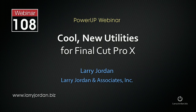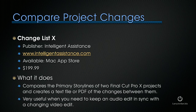In this excerpt, I want to talk about how you can compare project changes using Change List 10. One of the challenges we have is that deadlines are so tight that sometimes we want to know when a project has changed and what we've changed about it. This is brand new, shipped last week — it's called Change List 10. Intelligent Assistance is the publisher at IntelligentAssistance.com. It's available in the Mac App Store, it's $199 and change. What it does is it compares the primary storylines of two Final Cut Pro X projects and creates a text file or a PDF of the changes between them.